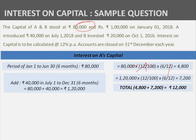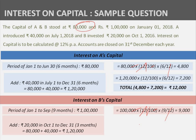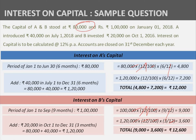For B's capital: 1,00,000 was invested from January 1 to September 30 — that is 9 months. Calculation: 1,00,000 × 12% × 9/12 = 9,000. From October 1, additional 20,000 was introduced, making 1,20,000 for the remaining 3 months. Calculation: 1,20,000 × 12% × 3/12 = 3,600. Total interest on B's capital = 9,000 + 3,600 = 12,600. This is how we consider the time factor when additions or withdrawals occur mid-year.